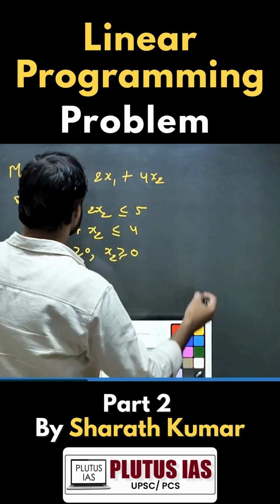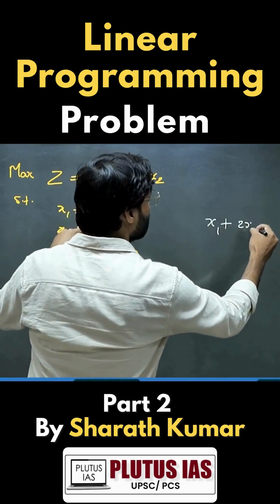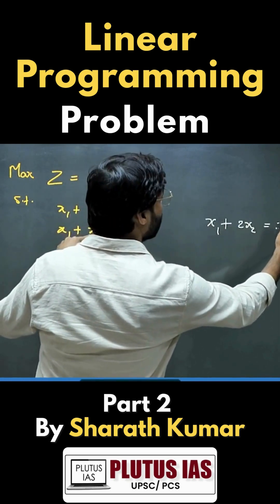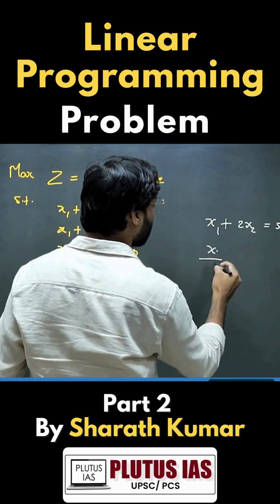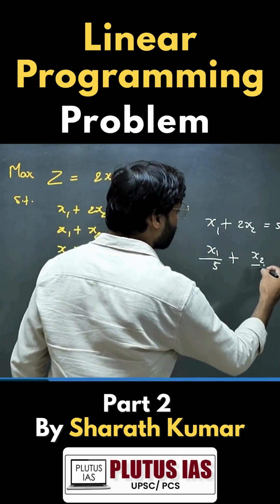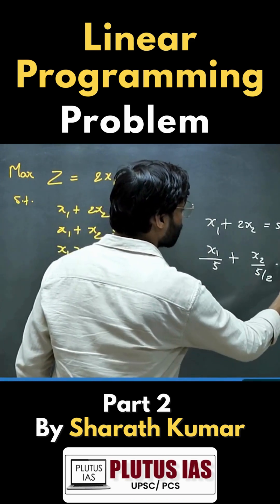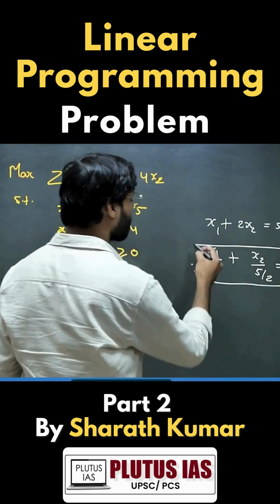We can take the first line x1 + 2x2 = 5, and we can write it in intercept form as x1/5 + x2/(5/2) = 1. That is the first equation.